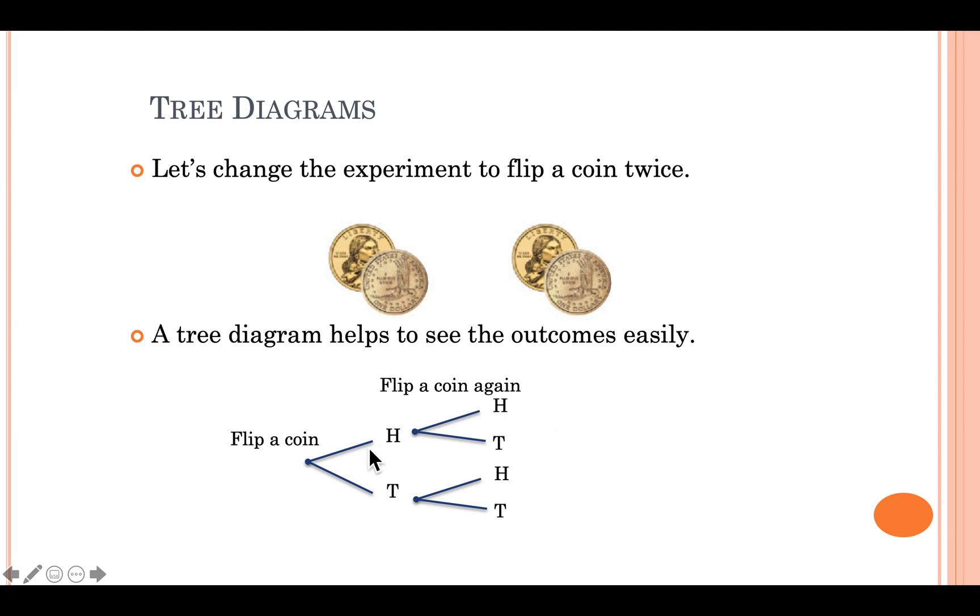Now, what this first path refers to: this refers to the first coin flip, and this is the second coin flip. So if you flip the coin once and you get a heads, and you flip it a second time and you get another heads, this outcome is referred to as HH, or heads, heads, getting two heads.